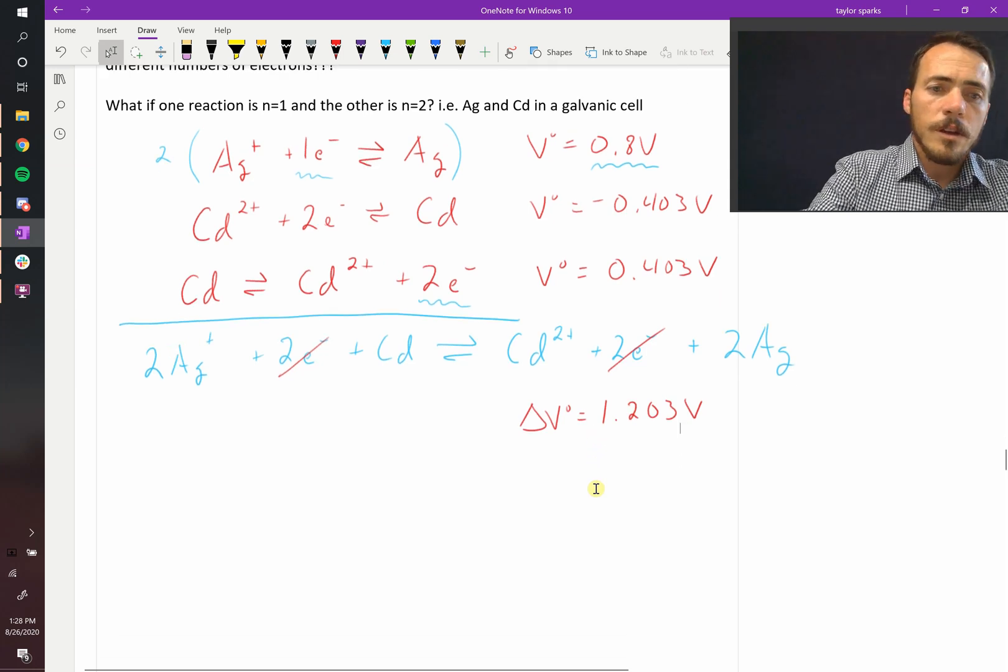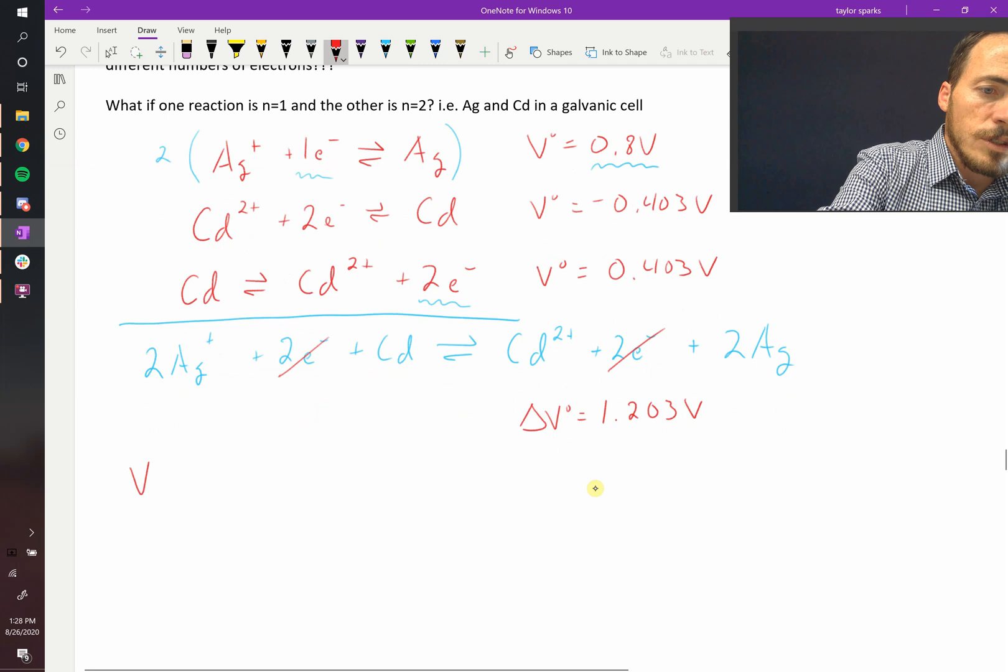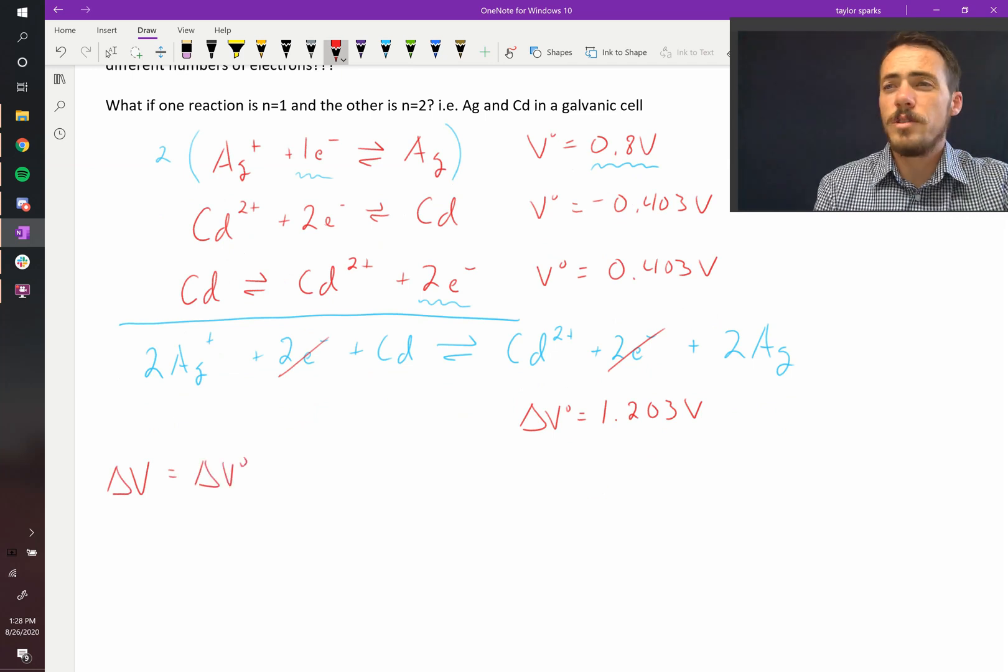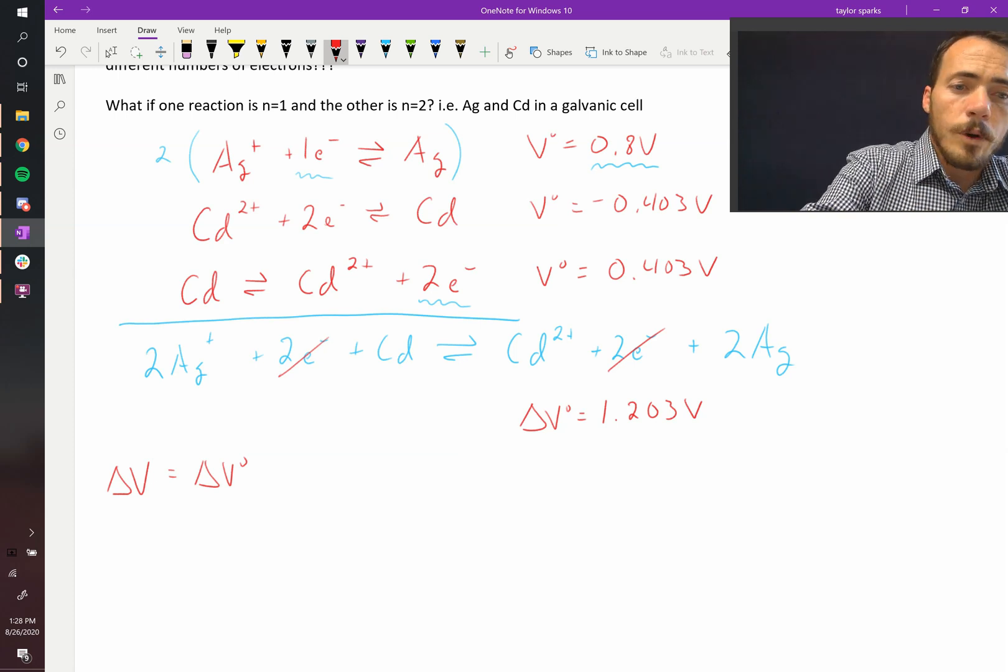But remember, the actually measured voltage, ΔV, is different than ΔV°, because ΔV° is just under standard conditions of 298K and equal molarity on both sides. If we want to modify it to account for those differences in temperature or different in concentration, then we do the following.